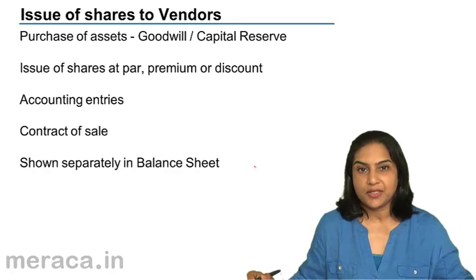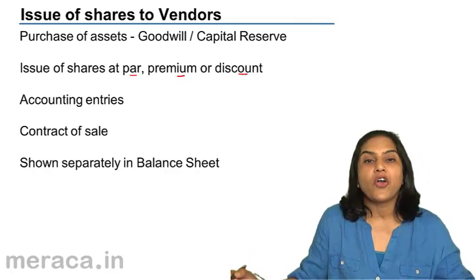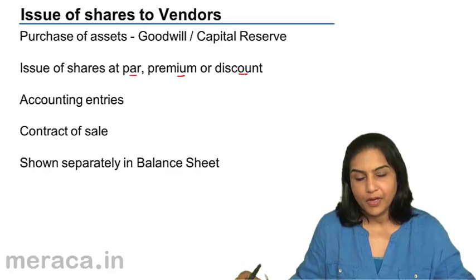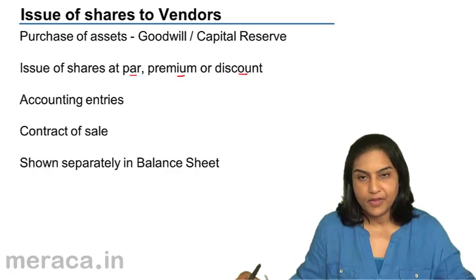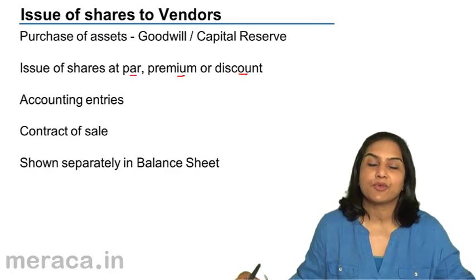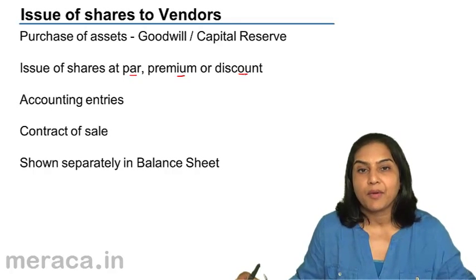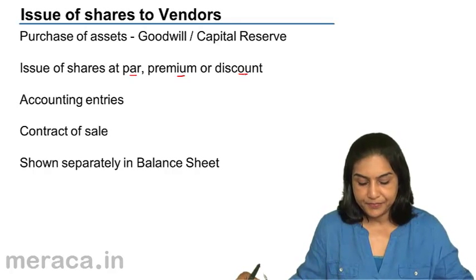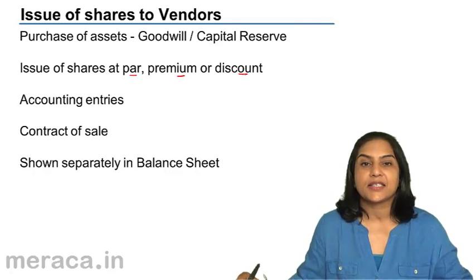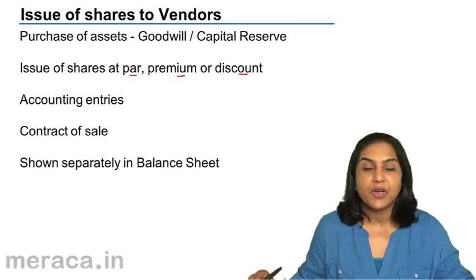When we issue the shares, these shares may be issued at par, at premium, or at a discount. What then would be the accounting entries? In this case also, just like there was a contract of sale for services, this contract of sale has to be produced before the registrar of companies when shares are issued to vendors. And as discussed in the case of promoters, it has to be shown separately in the balance sheet by way of a note.